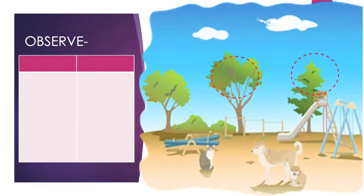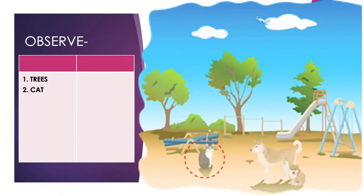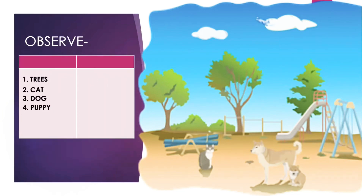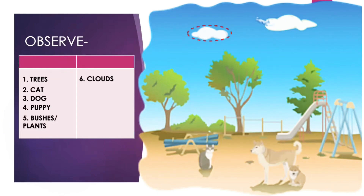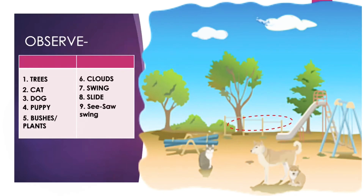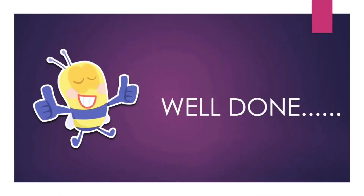You can see some trees, a cat, a dog, a puppy, some bushes or small plants. Look at the sky — there are some clouds. There is a swing and a slide, a seesaw, and some climbing bars. Well done — you have made a list of all the things you see in this picture.